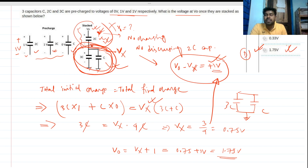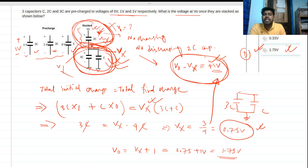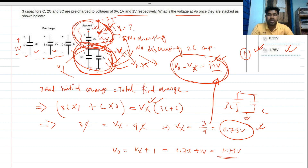To recap: the 2C capacitor is in an open circuit, so it cannot charge or discharge and maintains its previous potential of 1 volt. The C and 3C capacitors share their charges, giving a steady-state Vx of 0.75 volts. Therefore Vout becomes 1.75 volts, and the voltage across the two sharing capacitors remains the same in steady state.